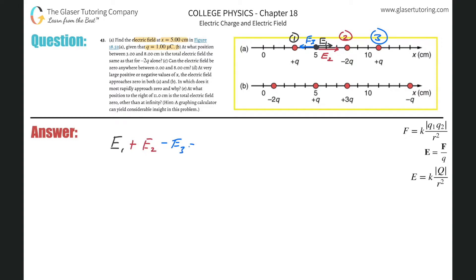That sum equals the total electric field, E_total. Now let's calculate it by substituting into the formula kq over r squared.